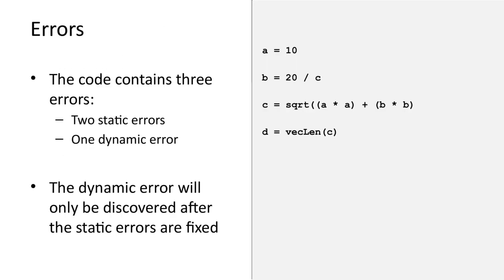Let's have a look at an example. The code contains three errors. Depending on the language and system being used to write the code, the errors may be detected in different ways. In this case, we will assume that the system detects two static errors and one dynamic error. The static errors will need to be fixed before the dynamic error can be discovered.